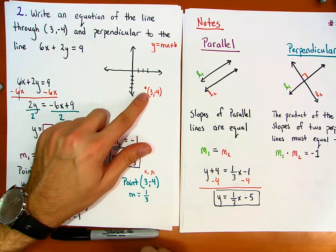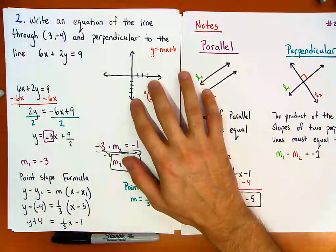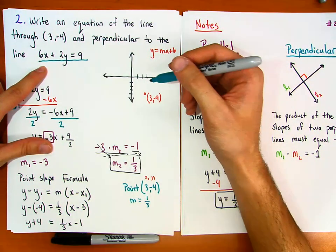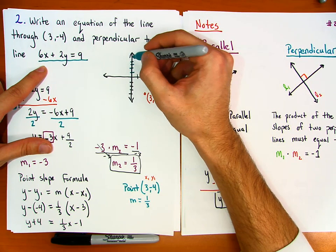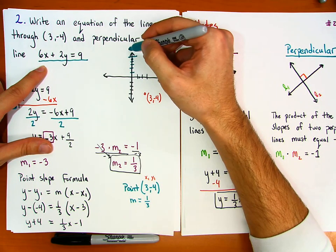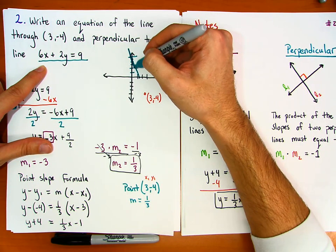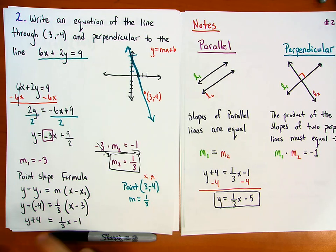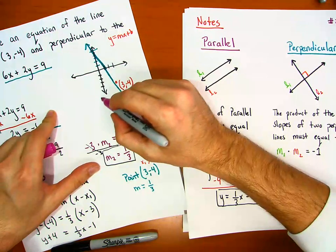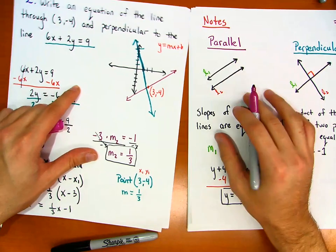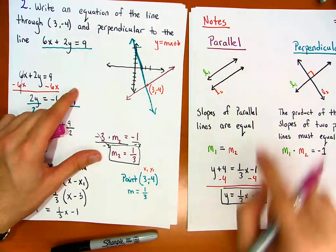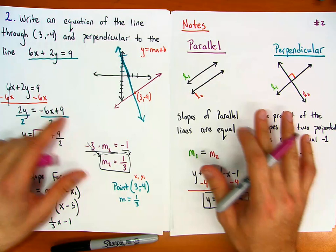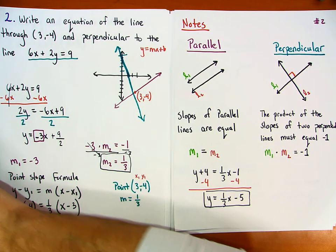Geometrically, this means if you graph this equation, the y-intercept is at negative 5 and the line passes through the point (3, -4). The other line — 6x + 2y = 9 — intersects it perpendicularly at that point. That's the geometric interpretation of this question.